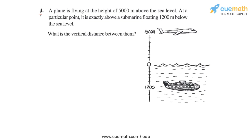In question 4 of this exercise, the problem statement says a plane is flying at a height of 5000 meters above the sea level. Look at this figure here — this is the plane, flying at a height of 5000 meters above the sea level.